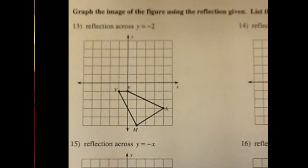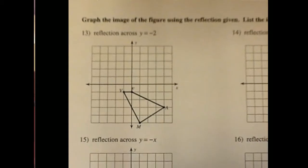The first step to being able to do any kind of problem where you're starting with a reflection is being able to recognize what is the line that your image is being reflected over. In the first problem, number 13, we see that we have a reflection across the line y equals negative 2.